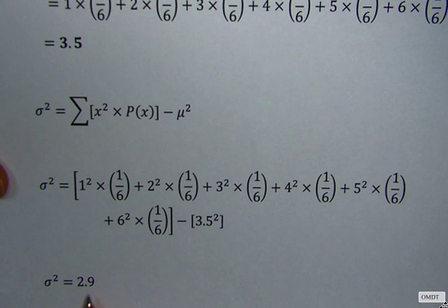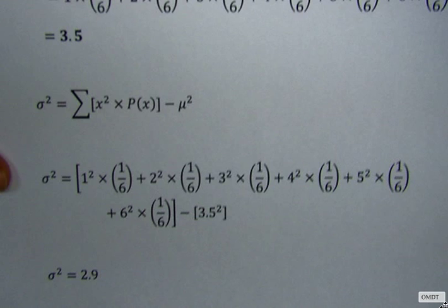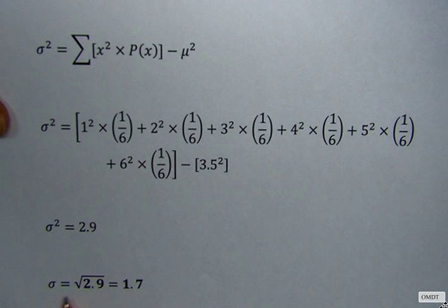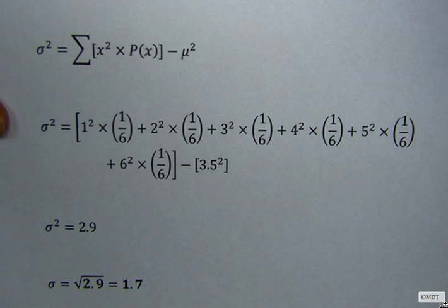Then, if we have to find the standard deviation, we take the square root of the variance. So standard deviation is equal to square root of 2.9, and that is equal to 1.7.